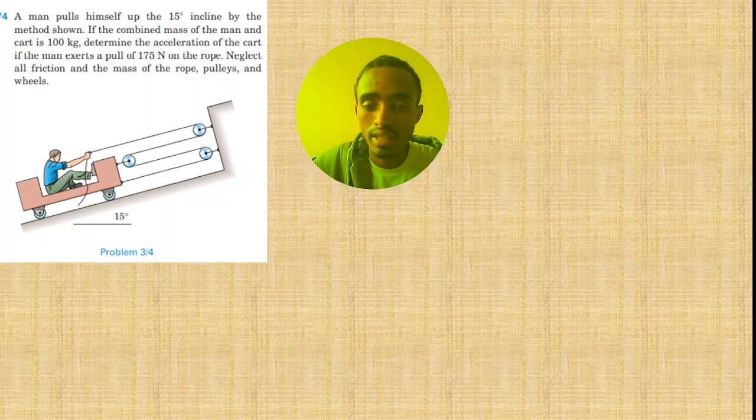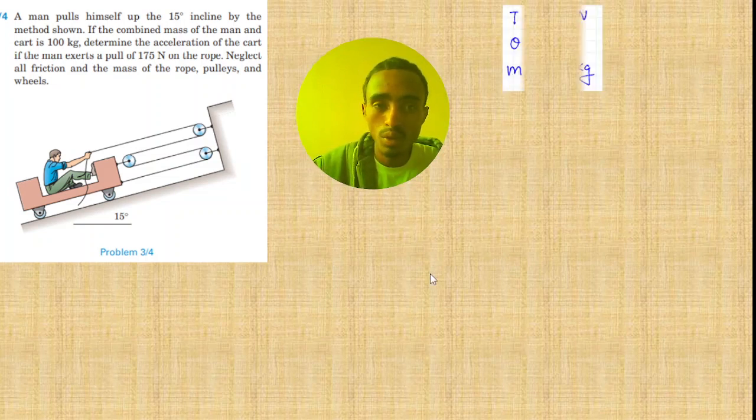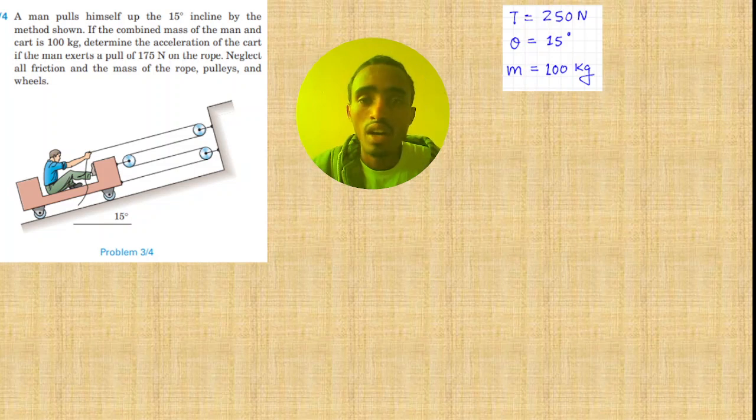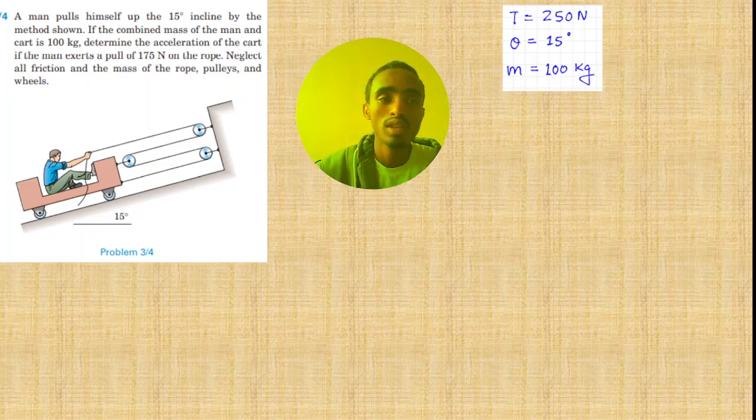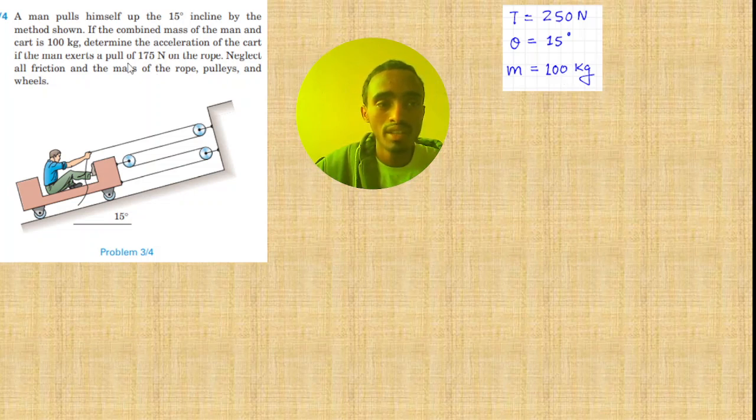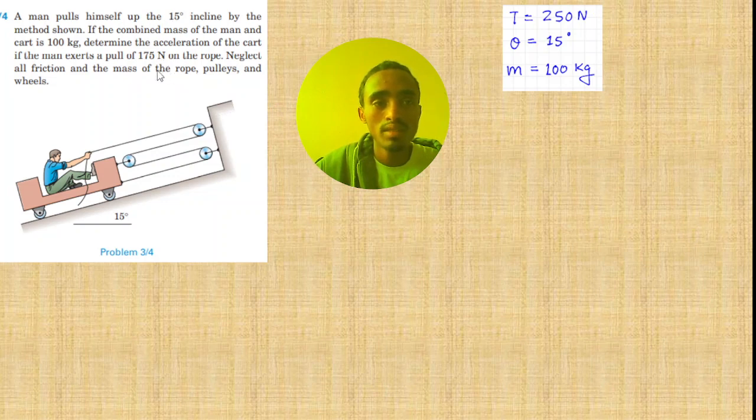As you can see here we are given the tension which is 215 newtons and theta which is 15 degrees, and the mass which is 100 kilogram. So the tension of the man is I can take 250 newtons here but 175 newtons you can change it by yourself.